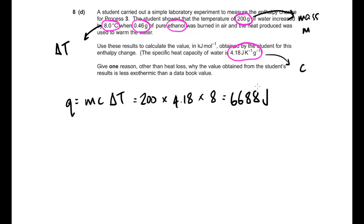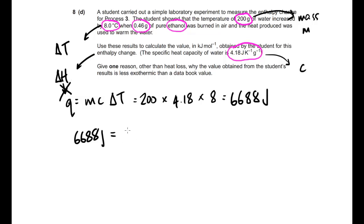So 6,688 joules — but that isn't the final answer. The question asks for the value in kilojoules per mole, and that's an enthalpy change — delta H. Q is not the same as delta H, but we can convert. First, look at the units: kilojoules. This is in joules, so divide by 1,000: 6,688 joules equals 6.688 kilojoules. Keep that as 6.688 rather than rounding, to avoid introducing rounding errors early on. I'd advise using the answer button on your calculator to recall previous answers, or storing numbers in memory variables, to completely eradicate rounding errors.